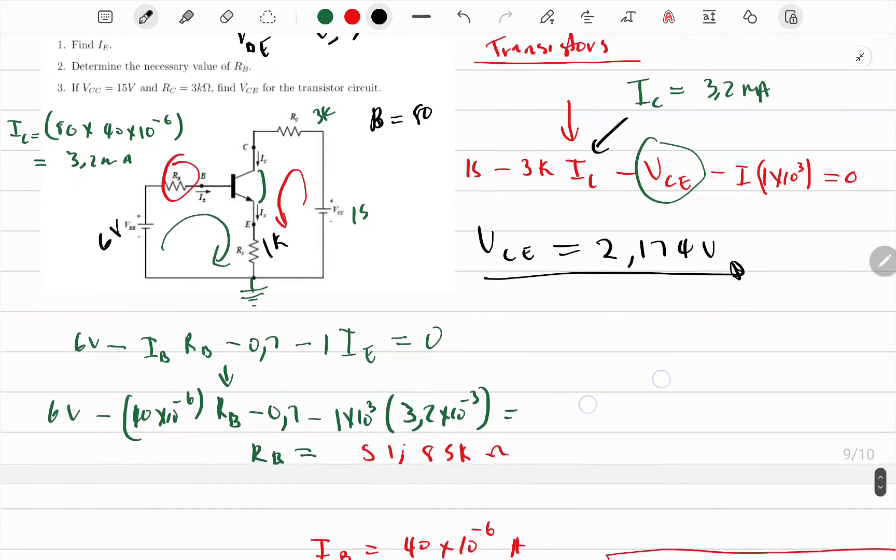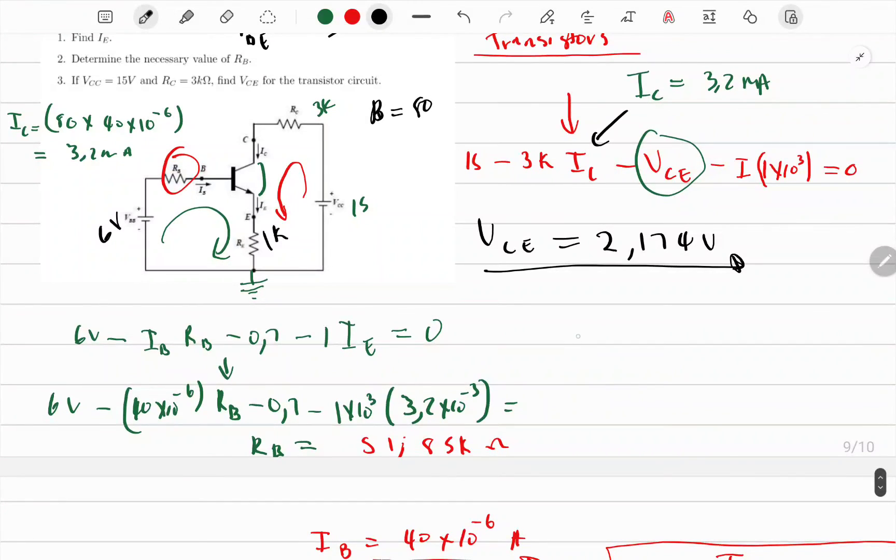This video was mainly me correcting my mistakes. The common mistake was that IC equals β times IB, and IC equals alpha multiplied by IE. That's the common mistake I was doing. Thank you.